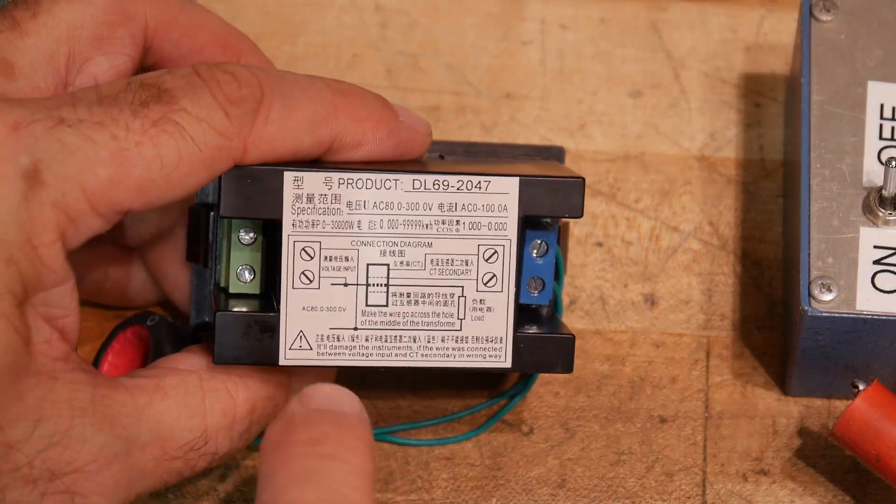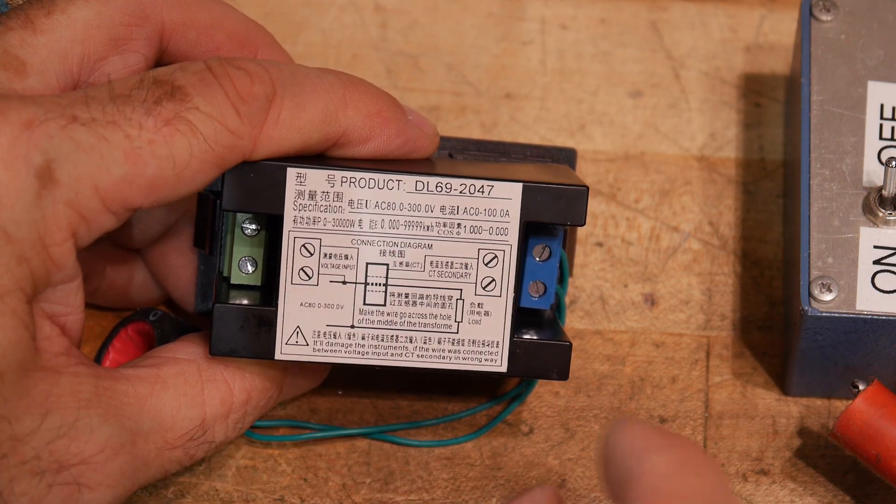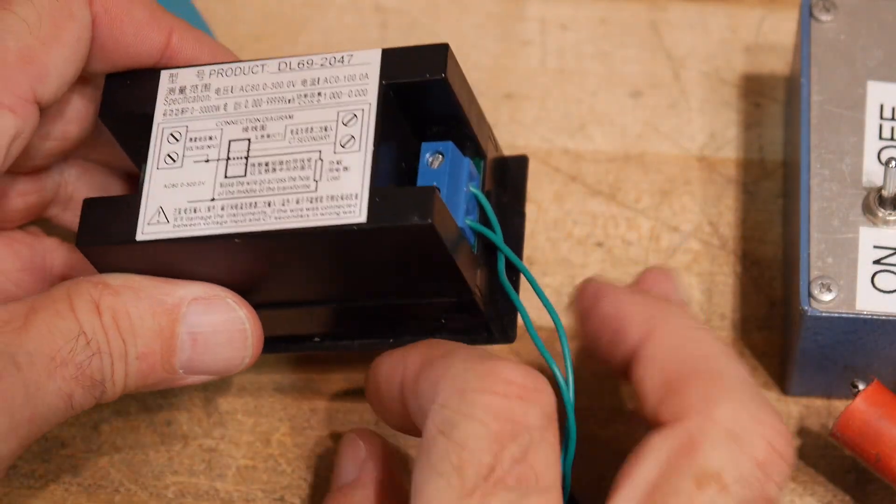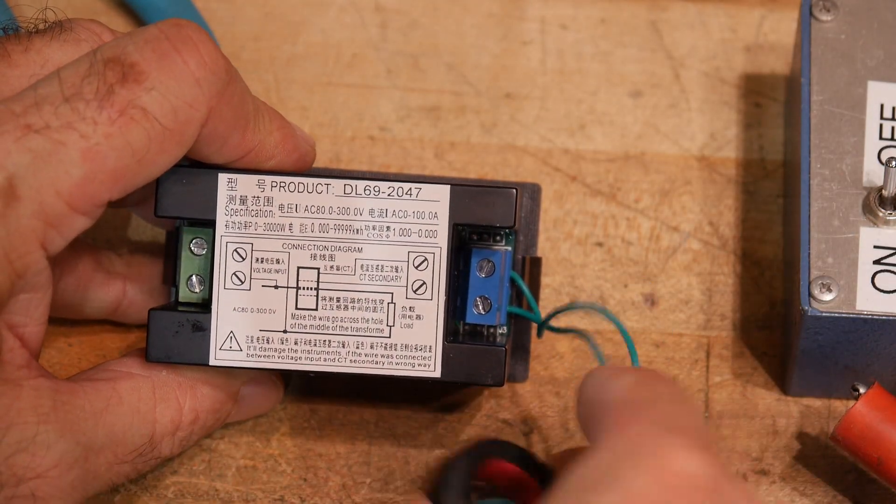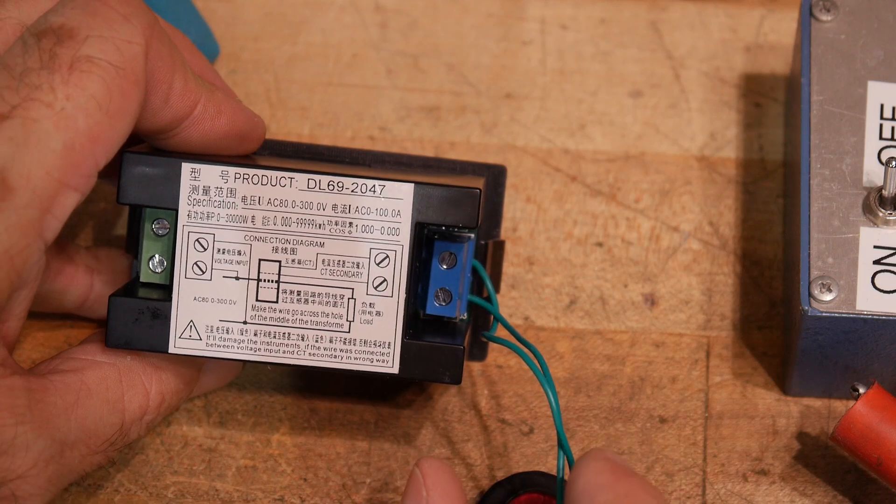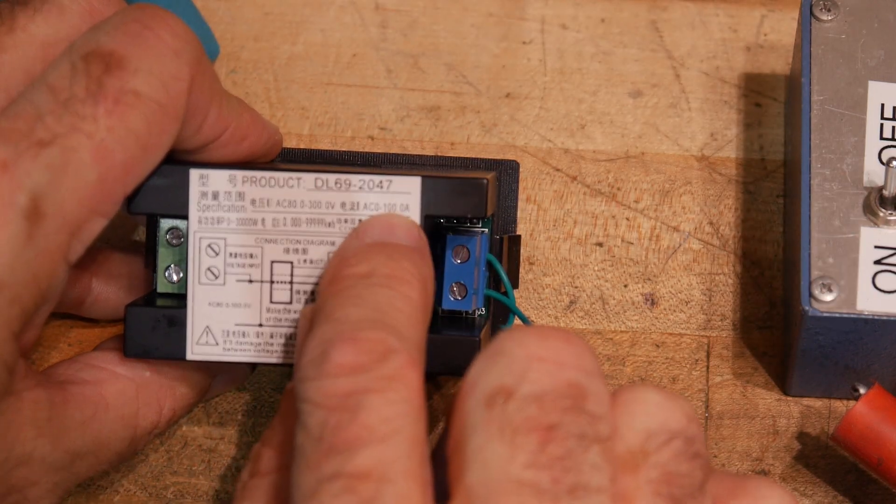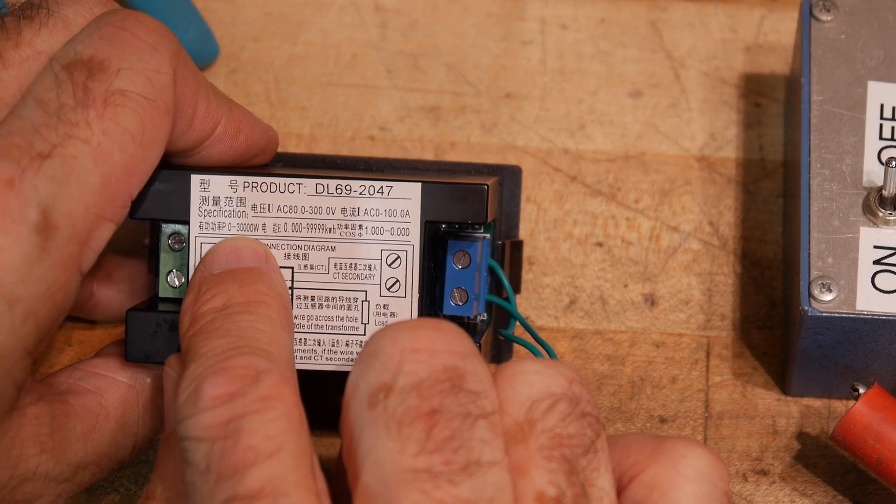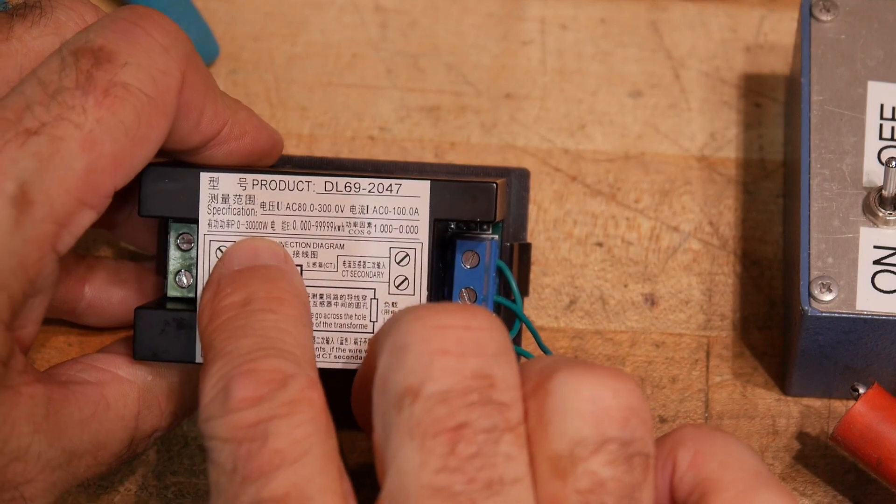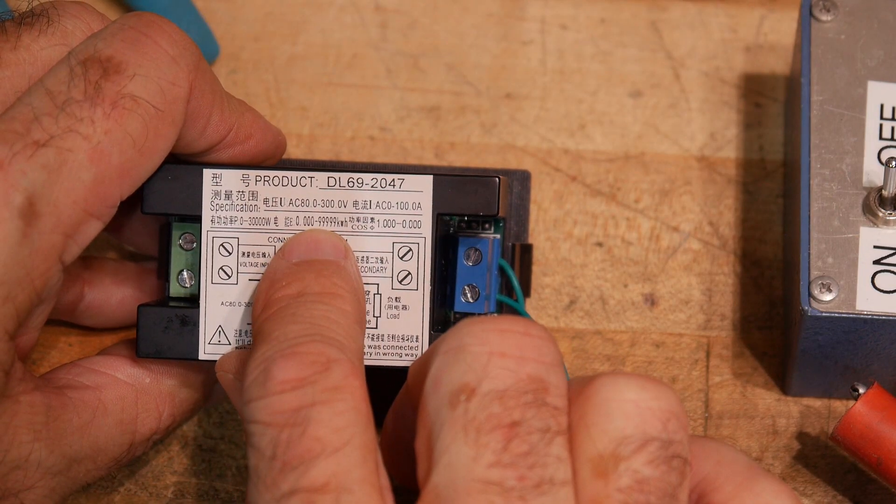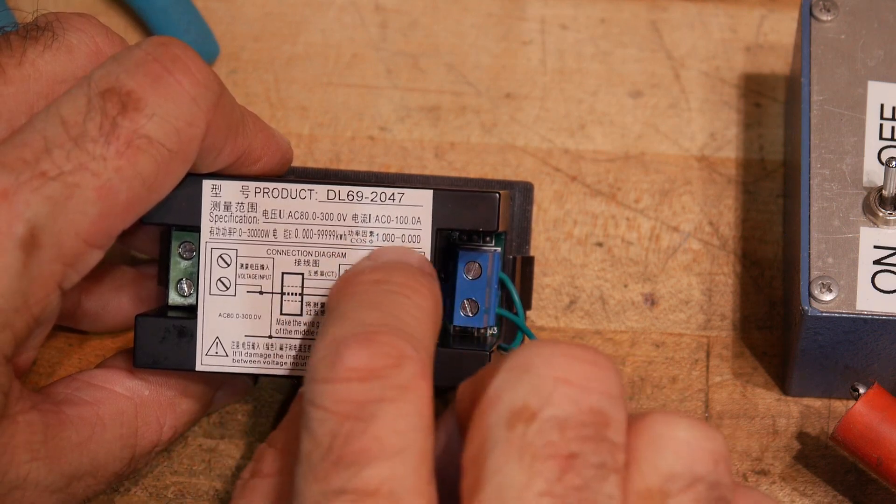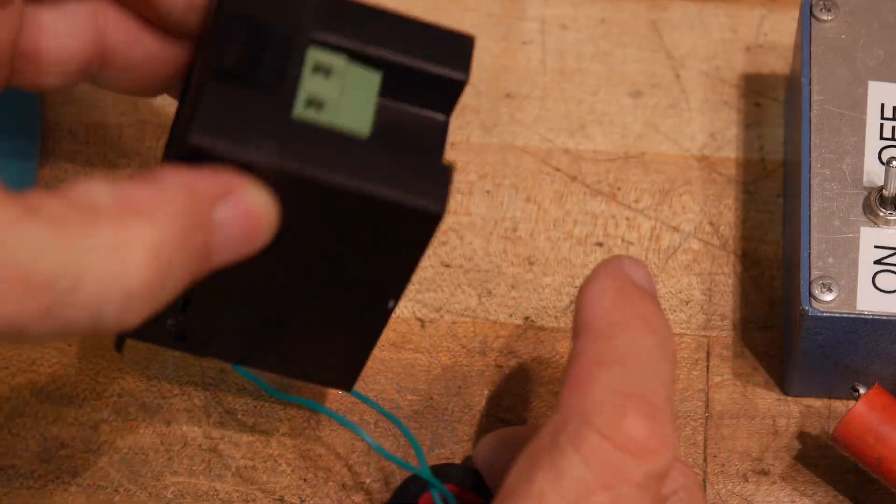So in order to use this thing, you have a power coming in. And you have this sensing toroid, right? So you need to have your wire go through here that you want to sense the current from. And then the wire would then go through this into your load and then return again. So that's pretty self-explanatory. This claims 80 to 300, 0 to 100 amps, 0 to 30,000? 3000. Yeah, 3000 watts up to 9999 kilowatt hours. That's an accumulative thing, you know, how many hours it's run. Then the cosine factor from 0 to 1. So yeah, so let's power this thing up.